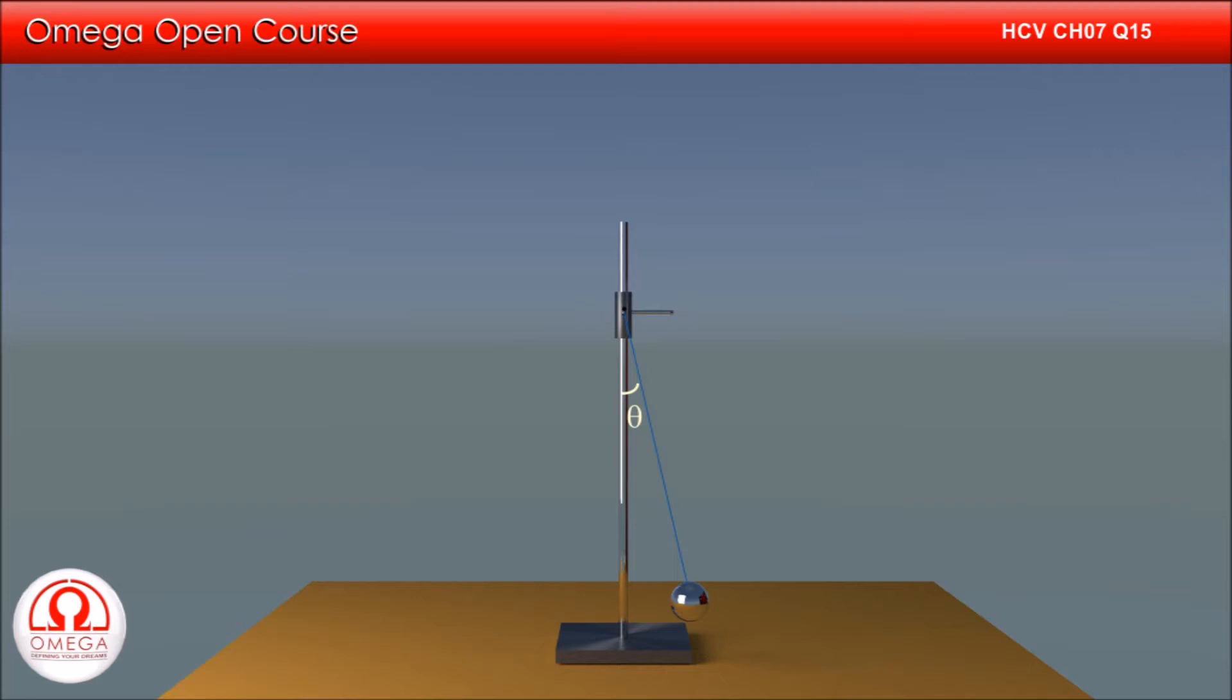Let us draw the free body diagram of the bob. Gravitational force of mg acts in vertically downward direction. The component of gravity along the string is mg cos theta and perpendicular to the string is mg sin theta. Tension in the string acts along the string and centrifugal force of mv square by r acts in radially outward direction.